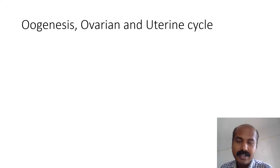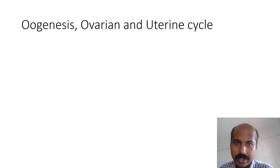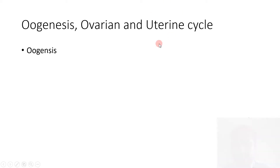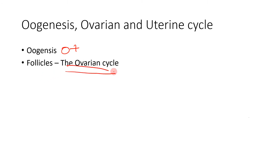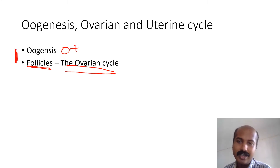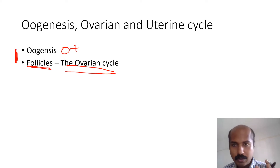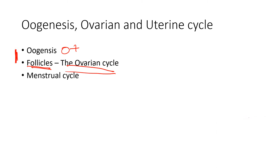Today we are going to learn about oogenesis, which is the female counterpart of spermatogenesis — the female type of gametogenesis. Along with oogenesis, we will also learn about the ovarian cycle and the uterine cycle. These three topics are closely connected: oogenesis, the ovarian cycle (including ovarian follicles), and the menstrual or endometrial cycle. Oogenesis is commonly asked in exams.